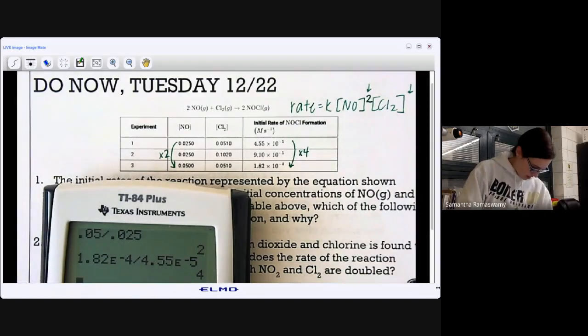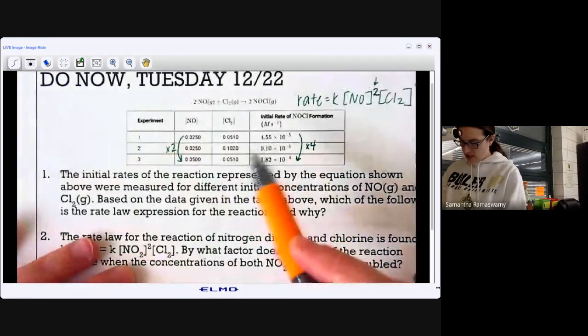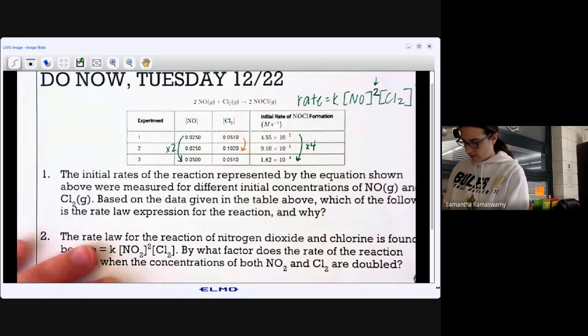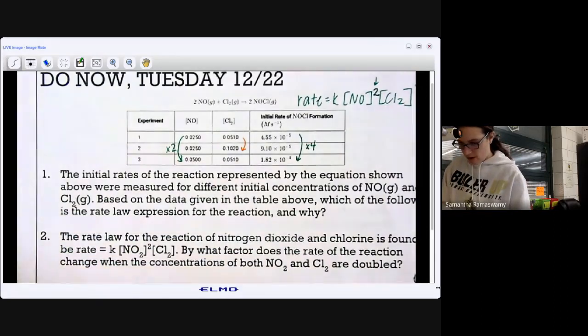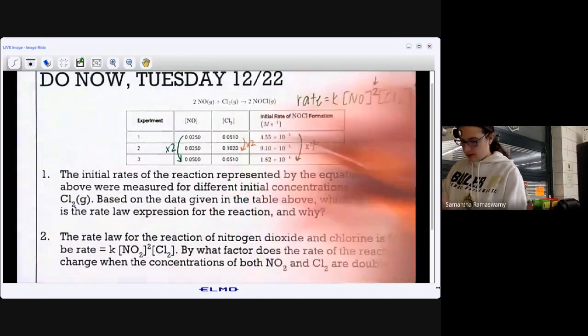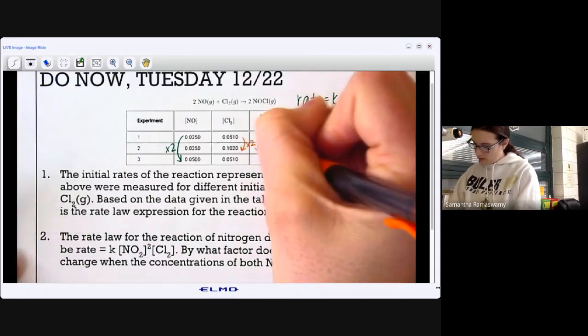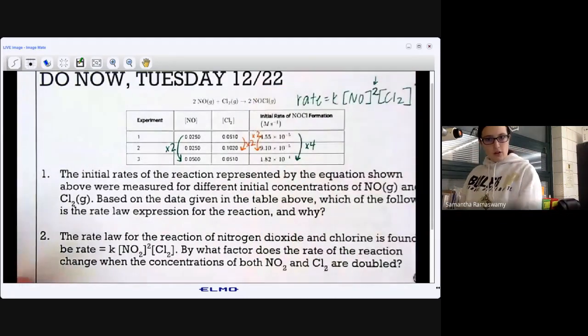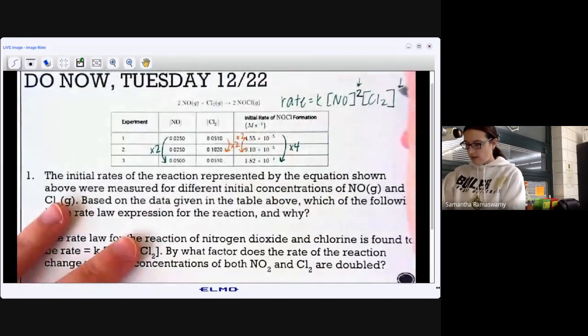Now let's do the same thing for Cl2, and I'll use a different color just to make it a little bit easier to see here. So let's look at Cl2. I need to see where Cl2 changes, but NO stays constant. So I'm going to look from one to two. Again, I'm going to do 0.1020 divided by 0.051. That's two. So we're doubling the concentration of Cl2 from experiment one to two. So let's look at the rate. 9.1e negative 5 divided by 4.55e negative 5 is also two. So when I double the concentration, I double the rate. Whatever I do to concentration, I do the same thing to the rate. That's first order.